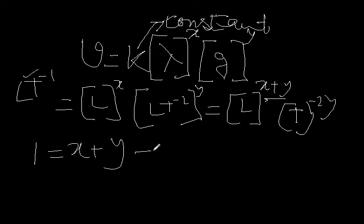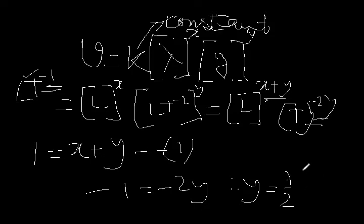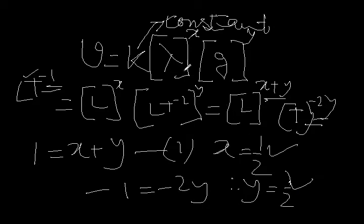So we get the equation: 1 equals X plus Y. Comparing the power of time, it is minus 1 on the left and minus 2Y on the right. So minus 1 equals minus 2Y, which gives Y equals one half. Substituting Y equals half, X also happens to be half. So we have solved both X and Y, each equal to half.